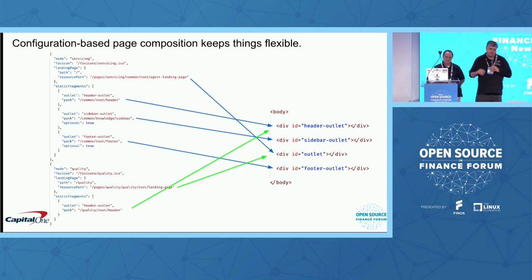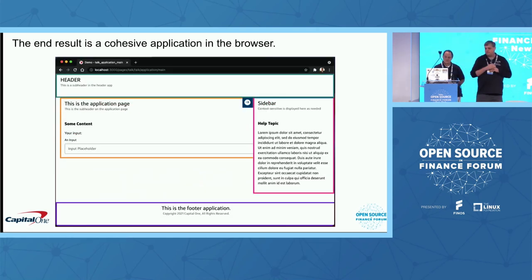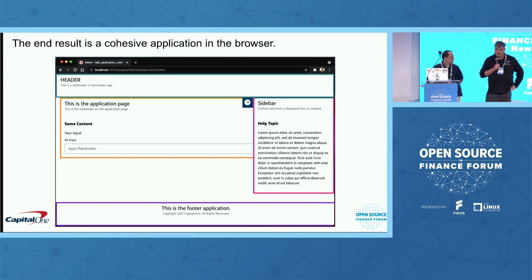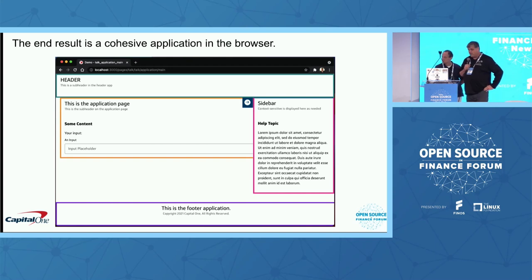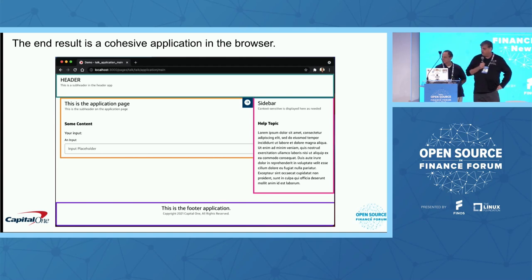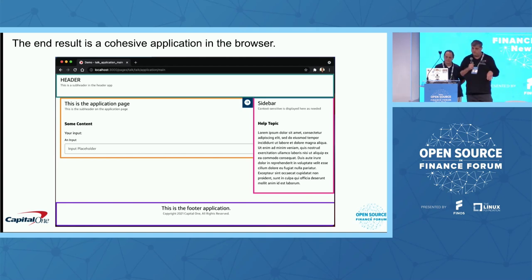The main outlet is where your application actually resides. How this comes together is as one cohesive application in the browser. This is essentially five different applications on the screen at the same time, all running independently. You have the header application, a sidebar application, the application page in the middle, a footer application, and then the shell is what brings it all together.